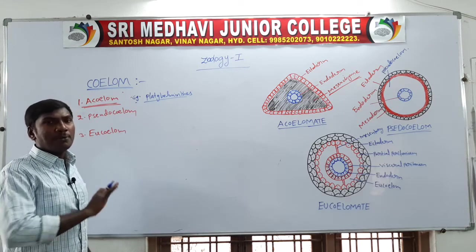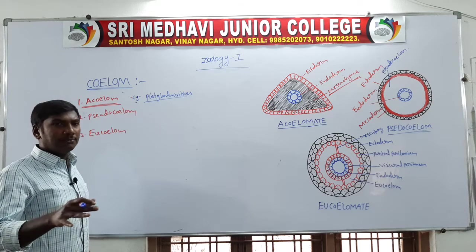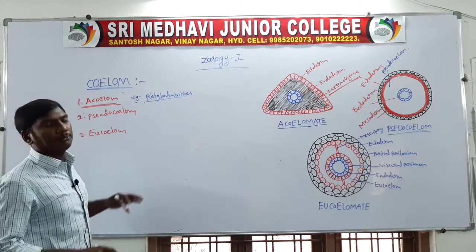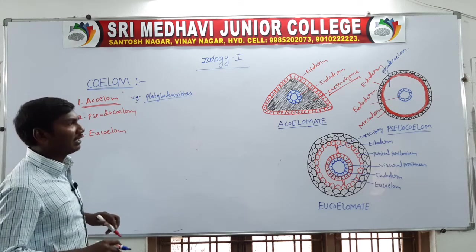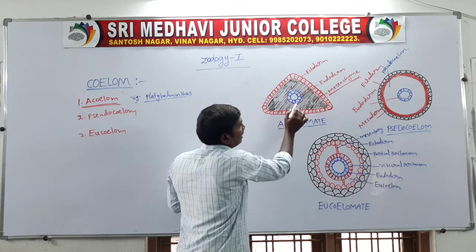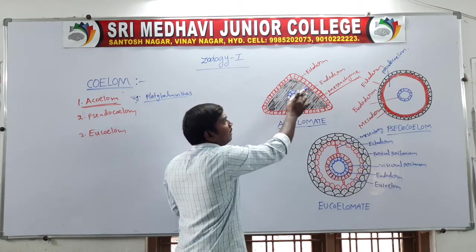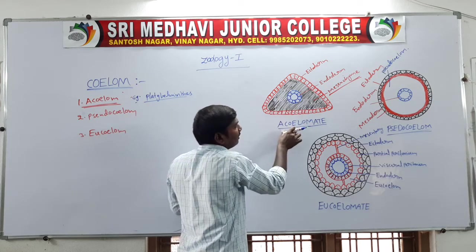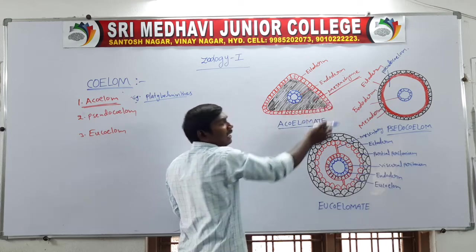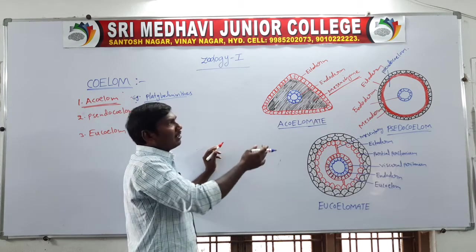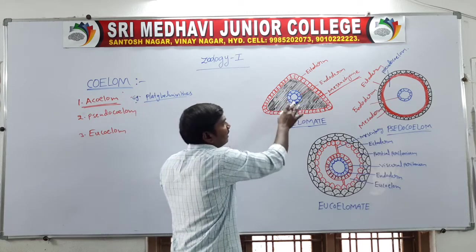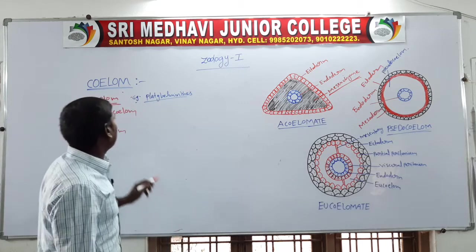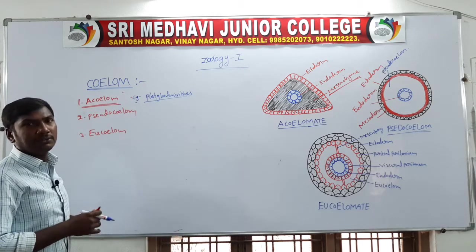In acoelomates, there is no body cavity. The mesoderm is derived from the mesenchyme, so the space is filled by mesenchyme. These animals have outer ectoderm and inner endoderm, but the middle space is occupied by mesenchyme — no empty or fluid-filled space. Example: Platyhelminthes.